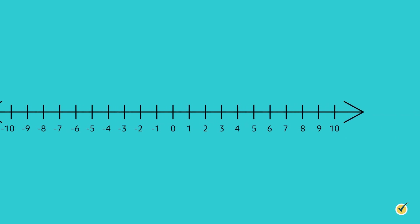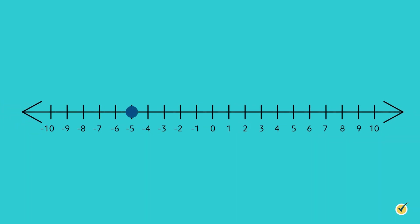Plotting a negative number would happen the same way. Simply put a dot over the number you are wanting to represent. The number line here shows the number negative 5.